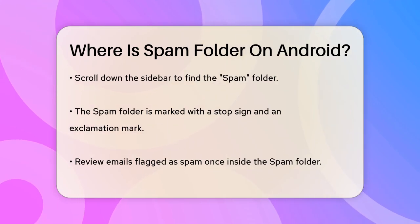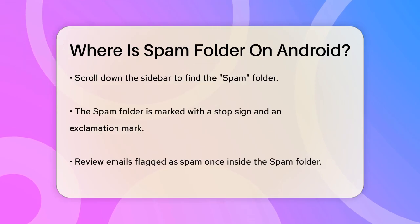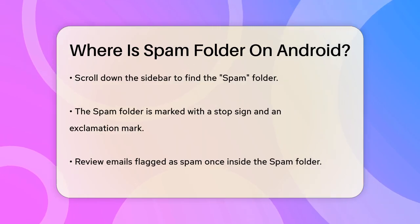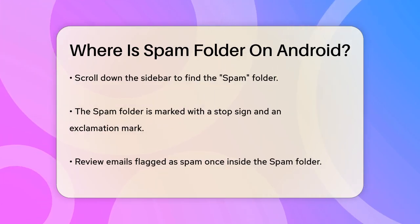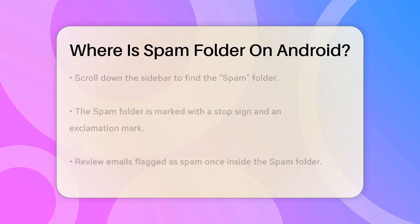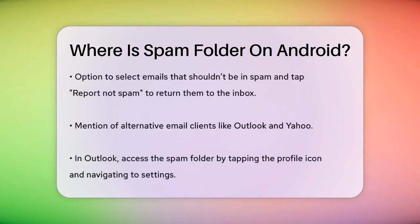Once you're in the Spam Folder, you can review the emails that have been flagged as Spam. If you find any emails that shouldn't be there, you can select them and tap Report Not Spam to move them back to your inbox.